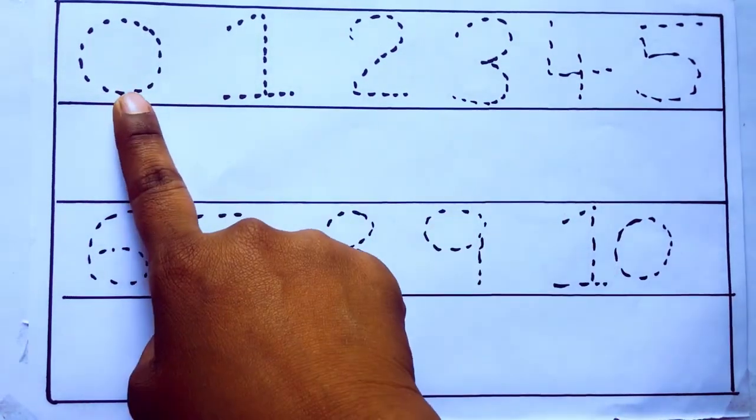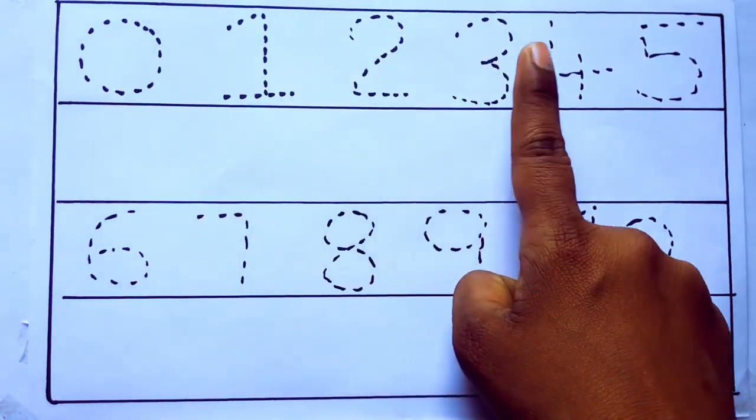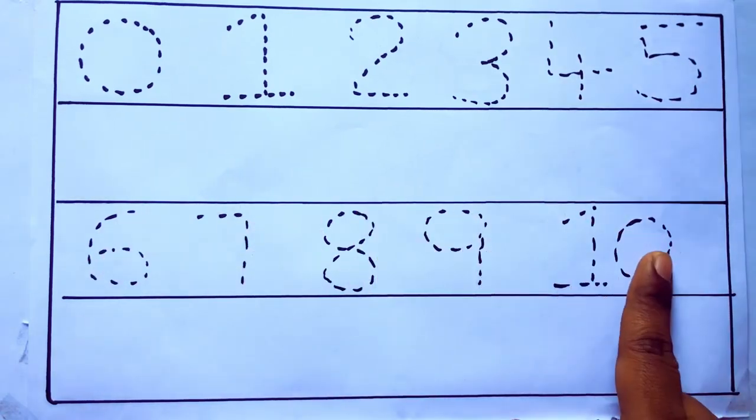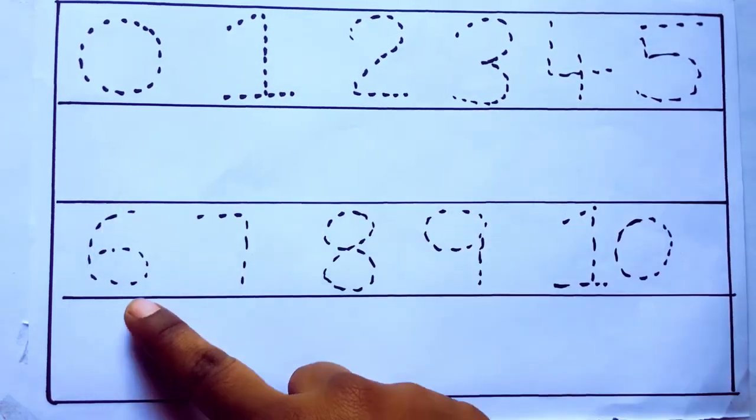Today we are going to learn numbers 0 to 10: 0, 1, 2, 3, 4, 5, 6, 7, 8, 9, 10, and rewriting the numbers.